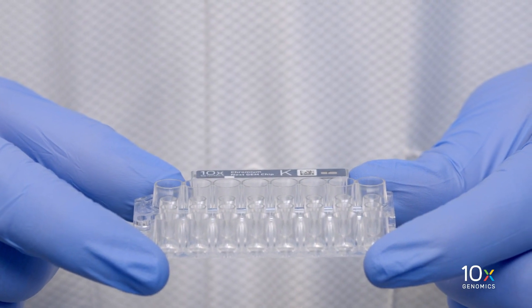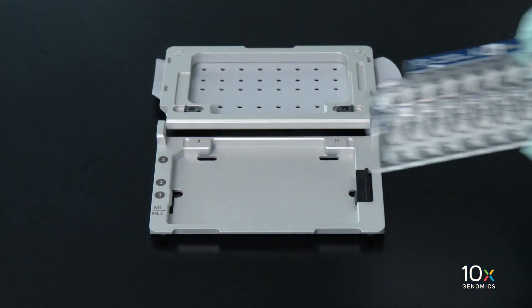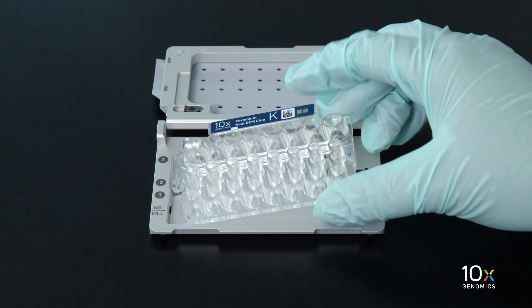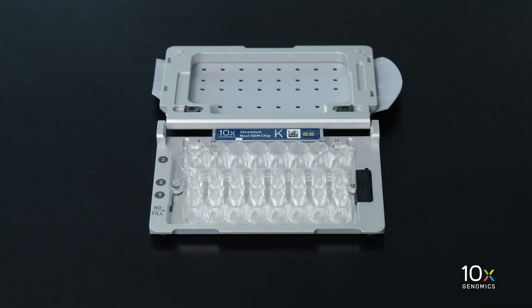We will hold the chip by the edges, making sure not to touch the bottom of the chip. Align the notch on the chip in the upper left corner and the holder. Slide the chip to the left until the chip is inserted under the guide on the holder. Depress the right-hand side of the chip until the spring-loaded clip engages.